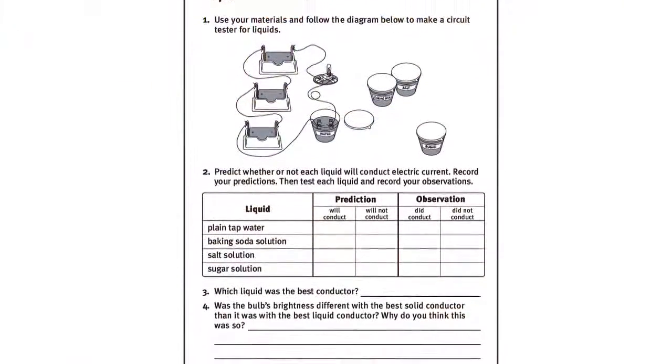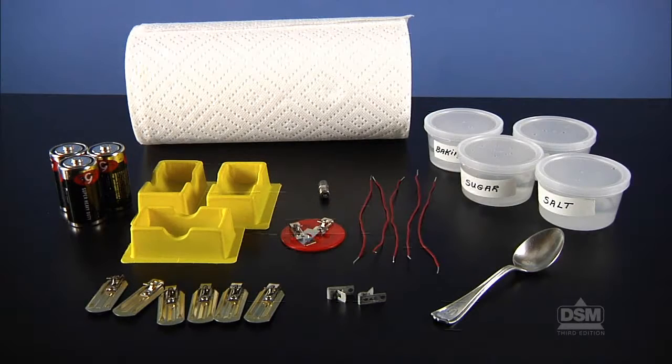Next, distribute a copy of Activity Sheet 7 to each student and the materials to each team. Help students construct their circuit testers for liquids. Discourage them from touching the Fondstock clips together, as this contact will drain the batteries and shorten the life of the bulb.